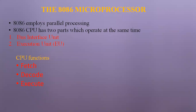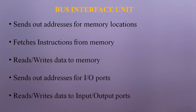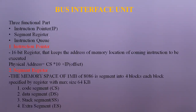The Bus Interface Unit handles fetch, decode, and send operations. It sends out addresses from memory locations, fetches instructions from memory, reads or writes data to memory, and sends out addresses for IO ports. The BIU is classified into three main parts: the instruction pointer, segment registers, and the instruction queue.